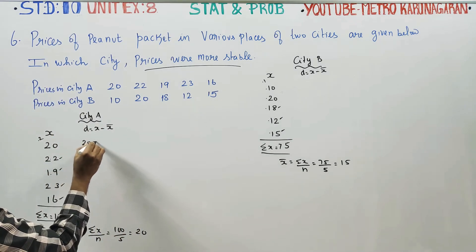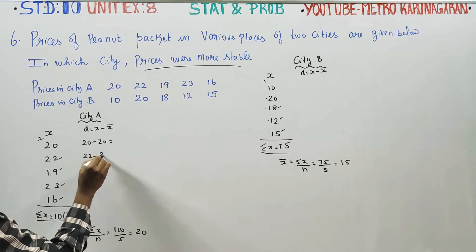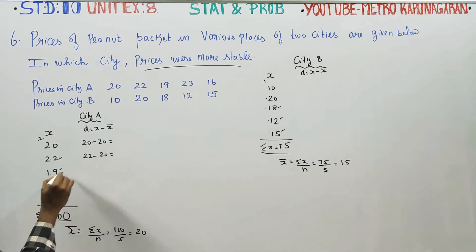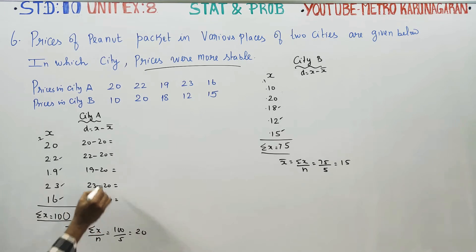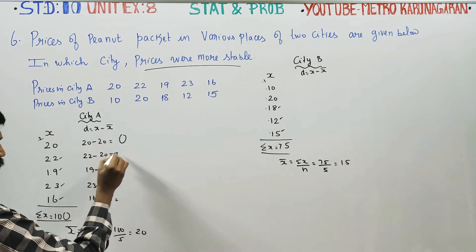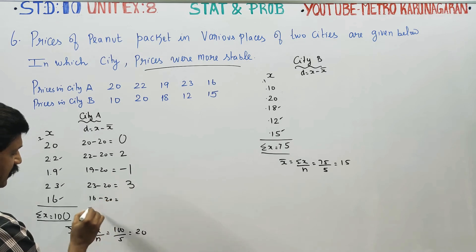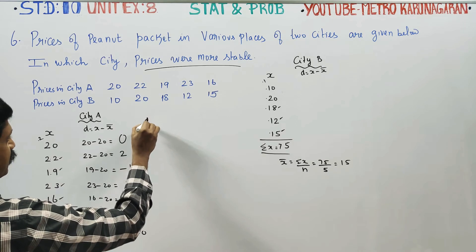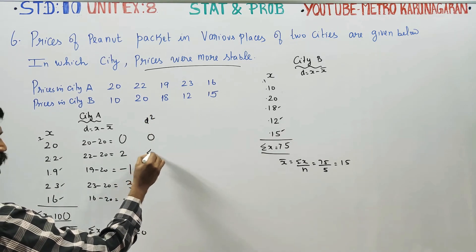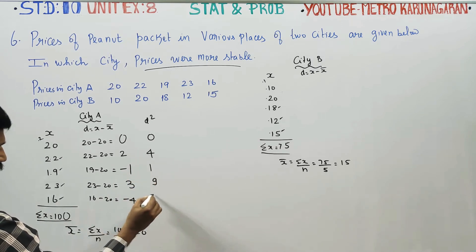For City A, d equals x minus x̄ where x̄ is 20: 20 minus 20 equals 0; 22 minus 20 equals 2; 19 minus 20 equals minus 1; 23 minus 20 equals 3; and 16 minus 20 equals minus 4. Now find d squared: 0, 4, 1, 9, and 16 respectively.